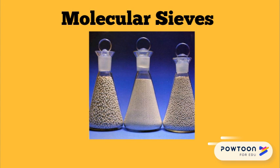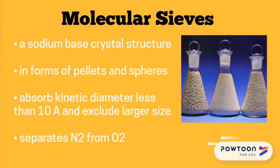A molecular sieve can be used in nitric acid plants with high-pressure absorption, where nitrogen dioxide is absorbed from waste gas at ambient temperature. A molecular sieve is a sodium-based crystal structure in the form of pellets and spheres. It works by absorbing molecules with a kinetic diameter of less than 10 Angstroms and excluding larger ones, allowing it to separate nitrogen gas from oxygen gas.